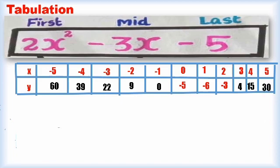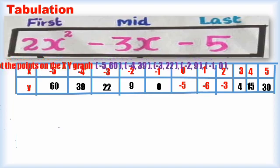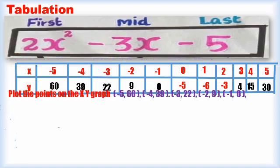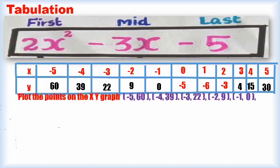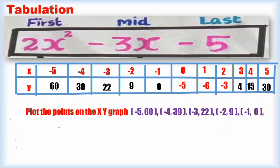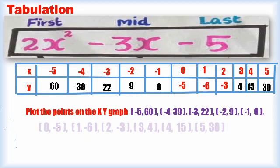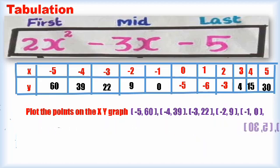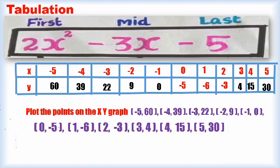Now we are going to plot these points on the X-Y graph. The coordinate pairs are: (minus 5, 60), (minus 4, 39), (minus 3, 22), (minus 2, 9), (minus 1, 0), (0, minus 5), (1, minus 6), (2, minus 3), (3, 4), (4, 15), and (5, 30).